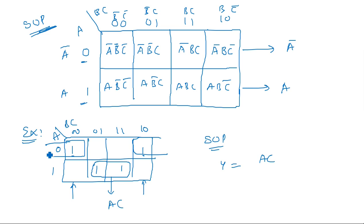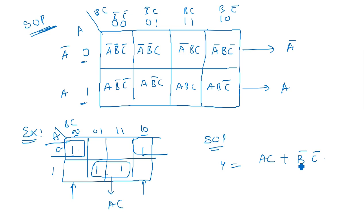Writing the SOP expression: for the first group, A is common and C is common, giving the term AC. For the second group using the wrapped ends, Ā is present and looking at B and C — zero is common, so zero belongs to C̄, giving the term B̄C̄. So Y = AC + B̄C̄. Originally there were four min-terms; using K-map we reduced them to just two terms without applying De Morgan's, distributive, or any other laws.